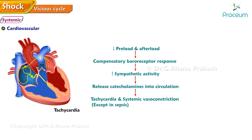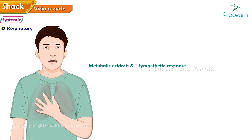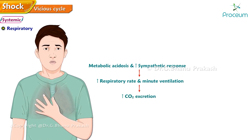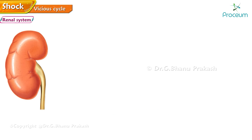Respiratory: The metabolic acidosis and increased sympathetic response result in an increased respiratory rate and minute ventilation. This in turn increases the excretion of carbon dioxide, resulting in compensatory respiratory alkalosis.